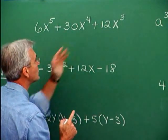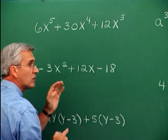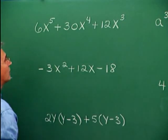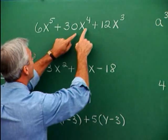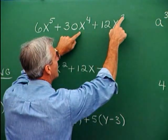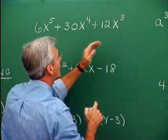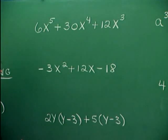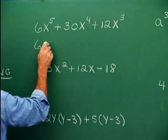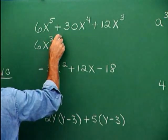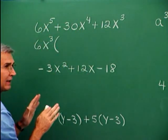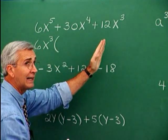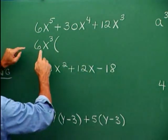What's the largest number that goes into those three? It's 6. So 6 is the largest numerical factor. For the variables, we have 5 factors of x in one term, 4 factors of x in another, and 3 factors of x in the third. Common to all three terms would be 3 factors of x. So we have 6x cubed that we're going to pull out of each term, and we write down what's left to give us the factored form.